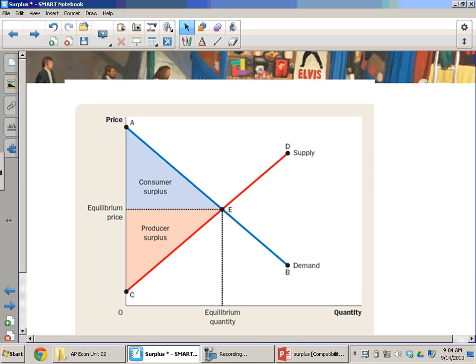Today's EconLine lesson is on total surplus. So I've just got a graph up here that represents what we've done in previous lessons with producer and consumer surplus. Now I've just got them both on the same graph. So quick review.